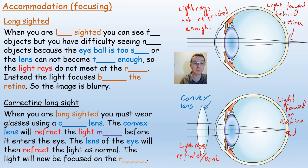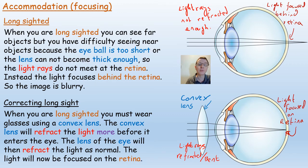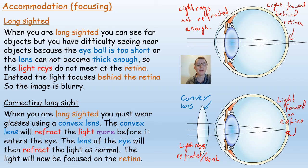Here's the gap fill — pause the video and think about those exam answers using keywords for accommodation, focusing, and correcting long sight. Here are the answers: when you're long-sighted, you can see far objects but have difficulty seeing near objects because the eyeball is too short or the lens cannot become thick enough, so the light rays do not meet at the retina — instead the light focuses behind the retina and the image is blurry. To correct long sight, you must wear glasses with a convex lens. The convex lens refracts the light more before it enters the eye; the eye's lens then refracts the light as normal and the light is now focused at the retina.